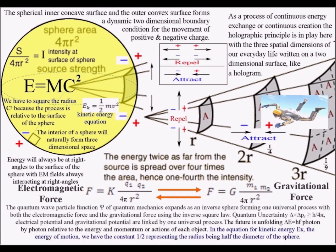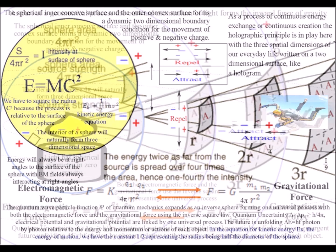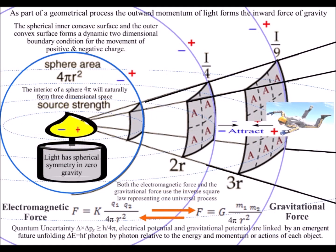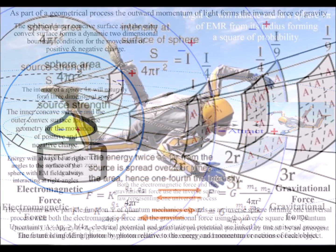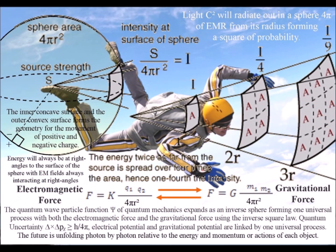In physics, there are two long-range forces: the electromagnetic force and the gravitational force. They both share the same geometry in the form of the inverse square law. These videos explain how both forces are based on the same geometrical process of energy exchange, with gravity being a secondary process to the electromagnetic force. This can be seen in the simple fact that gravitational potential energy goes down when two masses come together — for example, as a falling object gets closer to the ground, its gravitational potential energy decreases.